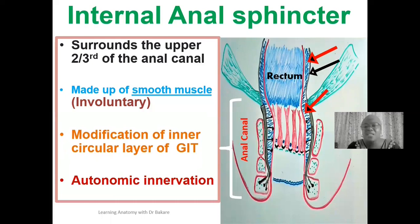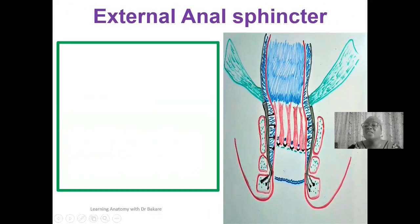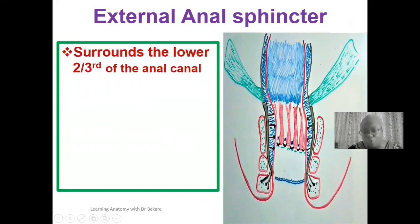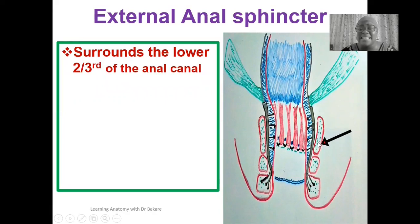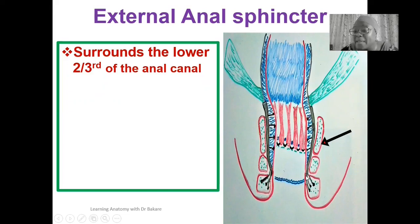The internal anal sphincter is also inhibited by autonomic nerves. Moving to the external anal sphincter — it is located at the external part, just as the name implies. The external anal sphincter surrounds the lower two-thirds of the anal canal, positioned external to the internal anal sphincter. If you look at the superior one-third, the external anal sphincter is not seen in that space.